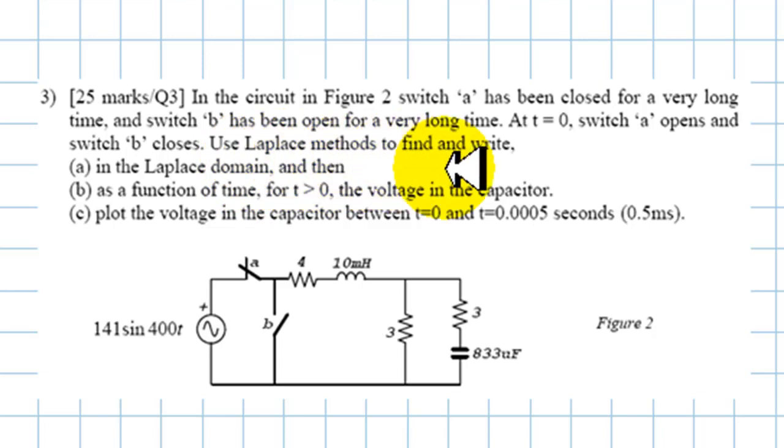Use Laplace methods to find and write, first in the Laplace domain, and then part B as a function of time for t after the switches operate. What is the voltage in the capacitor? What is this voltage here? And when you have that, plot that voltage in the capacitor between t equals 0 and t equals half a millisecond.